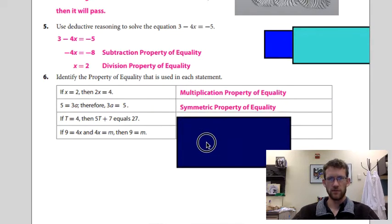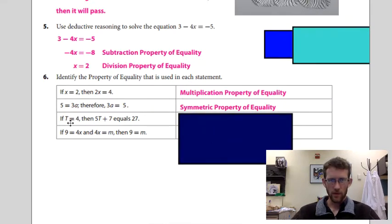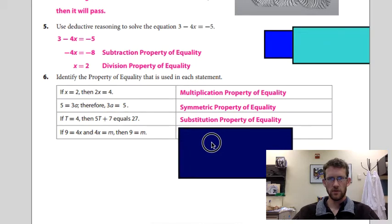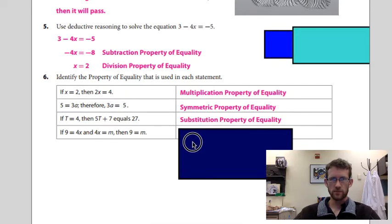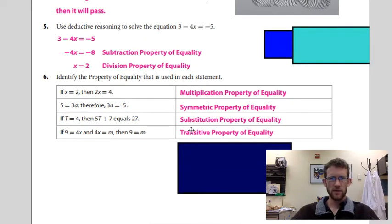This one, they multiplied both sides by five and then added seven. Oh no, no, that makes more sense. Okay, so if t equals four, then five t plus seven equals 27. Yeah, so substitute four in there. And then finally, if nine equals four x and four x equals m, then nine equals m. That's transitive. These two can sometimes be mixed in a little bit like this. You can define this as substitution in a way. I'd accept that on tests.